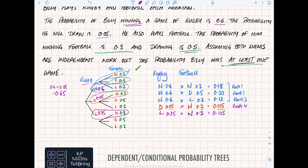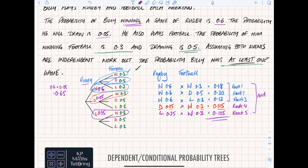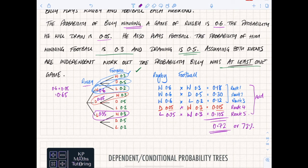Those are routes four and five. There are no other possible routes. Now remember: if you've got more than one route you then add all of these together. So: 0.18 plus 0.30 plus 0.12 plus 0.015 plus 0.105, and you end up with 0.72, or 72%. That is the probability of him winning at least one game that weekend.